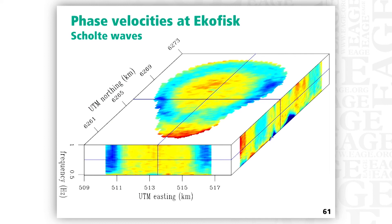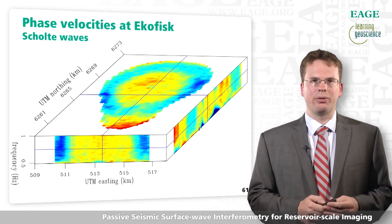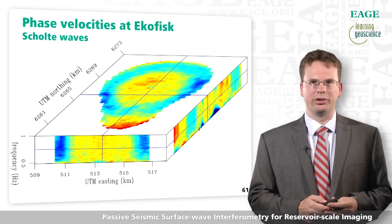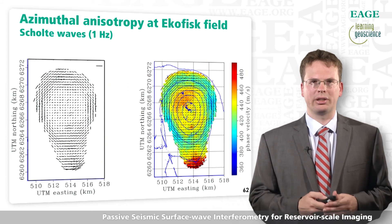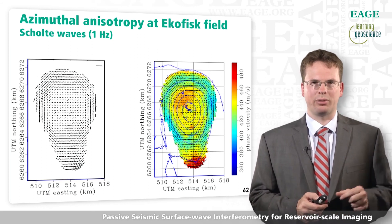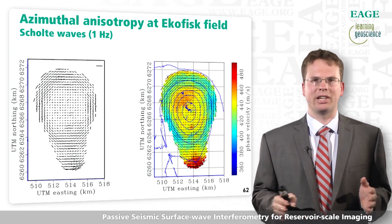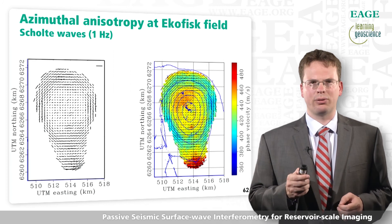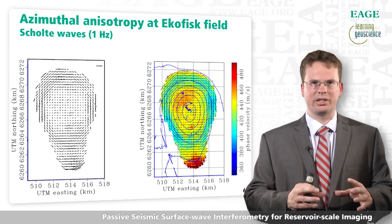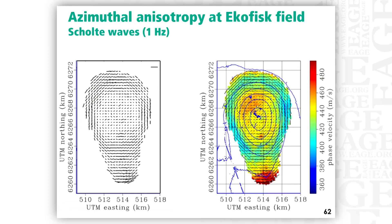Another data set I studied is one recorded at Ekofisk, a nearby field that also has a permanent ocean bottom cable installed. At Ekofisk I created a phase velocity cube of these interface waves as they travel. Not only did I look at their isotropic behavior, I also looked at their anisotropic behavior. The dashes on the left side of the slide represent the direction of fast propagation, while perpendicularly the surface waves propagate much slower. The length of these dashes indicates the strength of anisotropy — the difference between fast and slow. These form a large circle centered at the center of the array, tracing the subsidence pole caused by production.